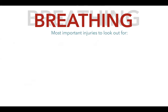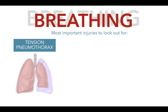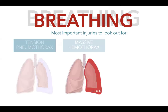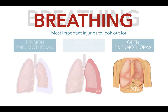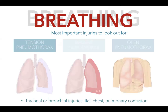The most important life-threatening injuries to look out for are: tension pneumothorax, massive hemothorax, and open pneumothorax. Injuries such as tracheal or bronchial injuries, flail chest, and pulmonary contusions are not immediately life-threatening but are potentially life-threatening if missed.